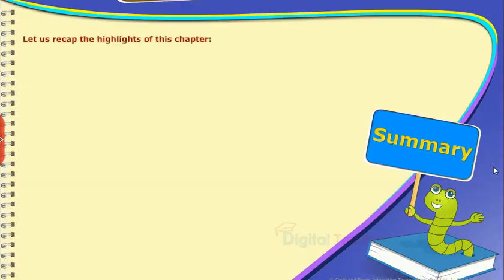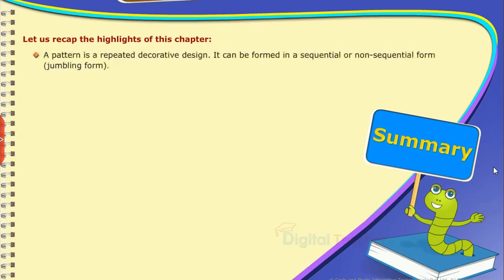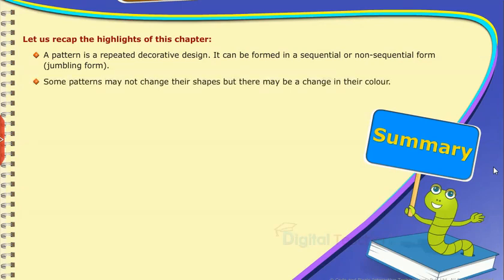Summary: Let us recap the highlights of this chapter. A pattern is a repeated decorative design. It can be formed in a sequential or non-sequential form, jumbling form. Some patterns may not change their shapes, but there may be a change in their color.